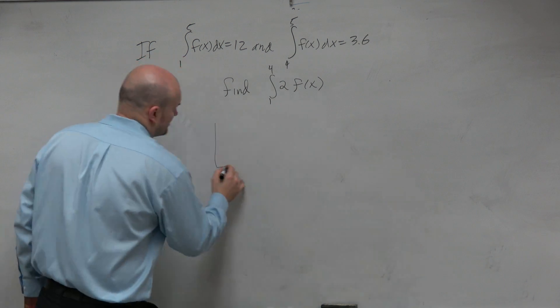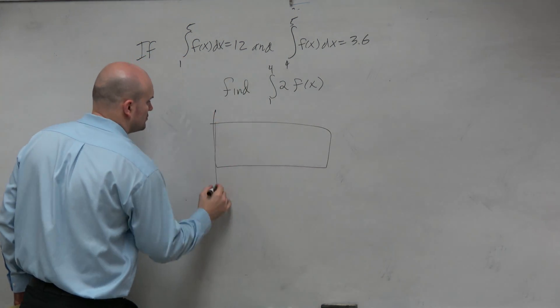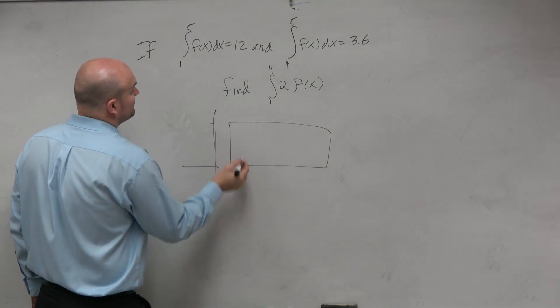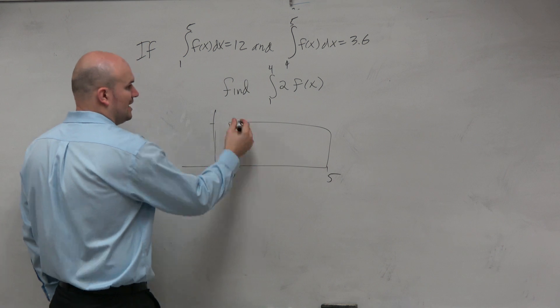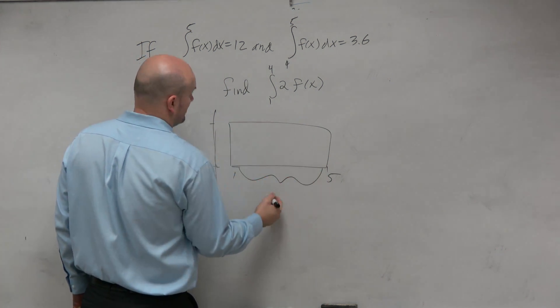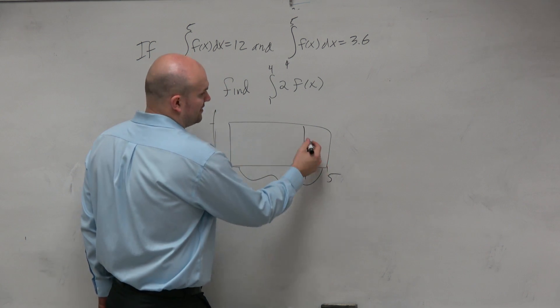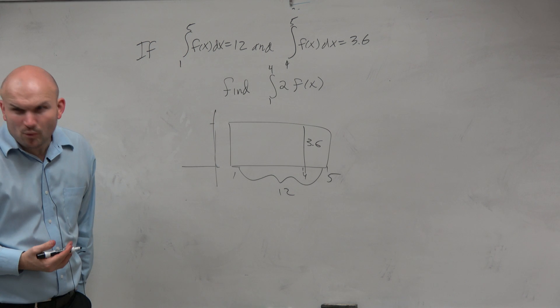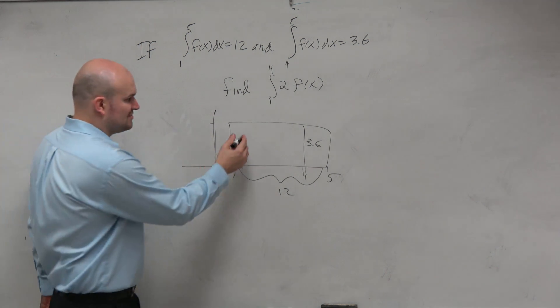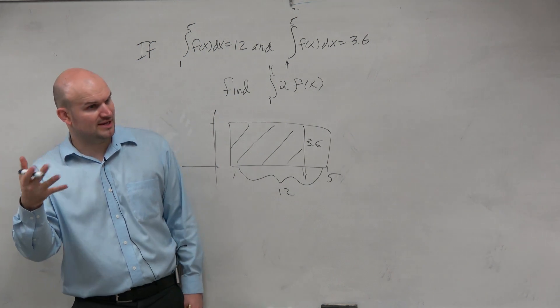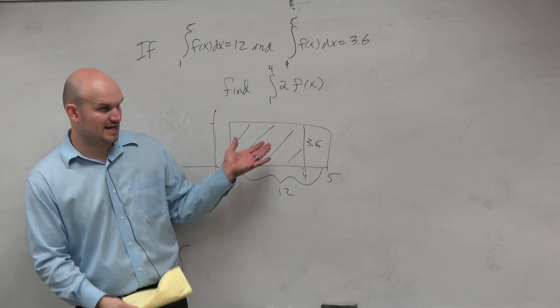So guys, again, let's kind of look at this. We're looking at an area, and it looks like we have the area from 1 to 5, right? And that whole area is 12. And then we also know from 4 to 5, that area is 3.6. And then what is it they're asking us the area for? They're asking us for this shaded area, right? So, can we think of a way to represent this that would find that shaded area?